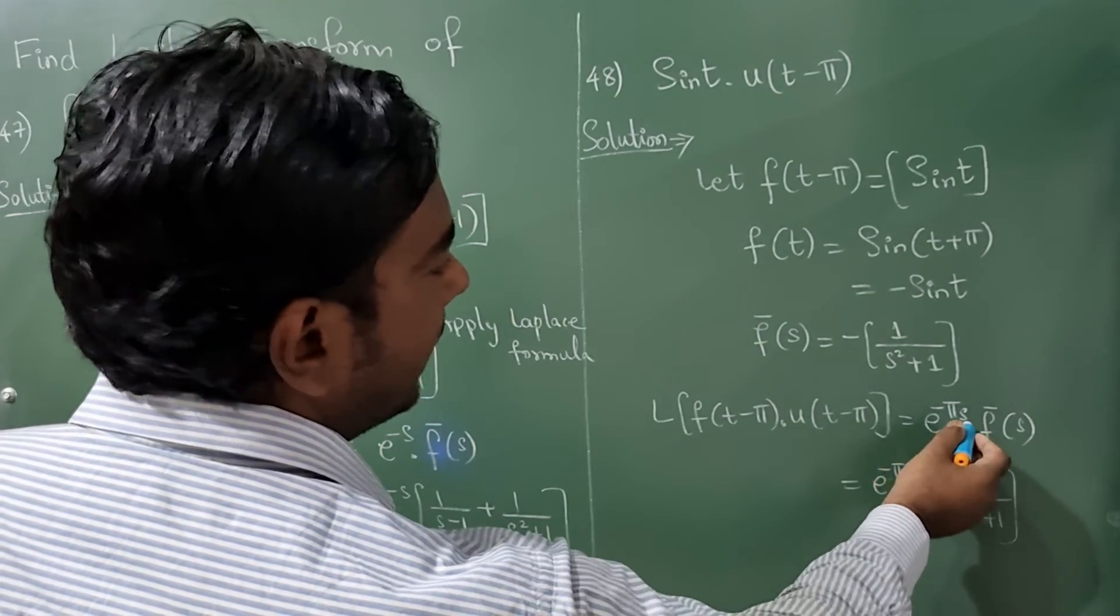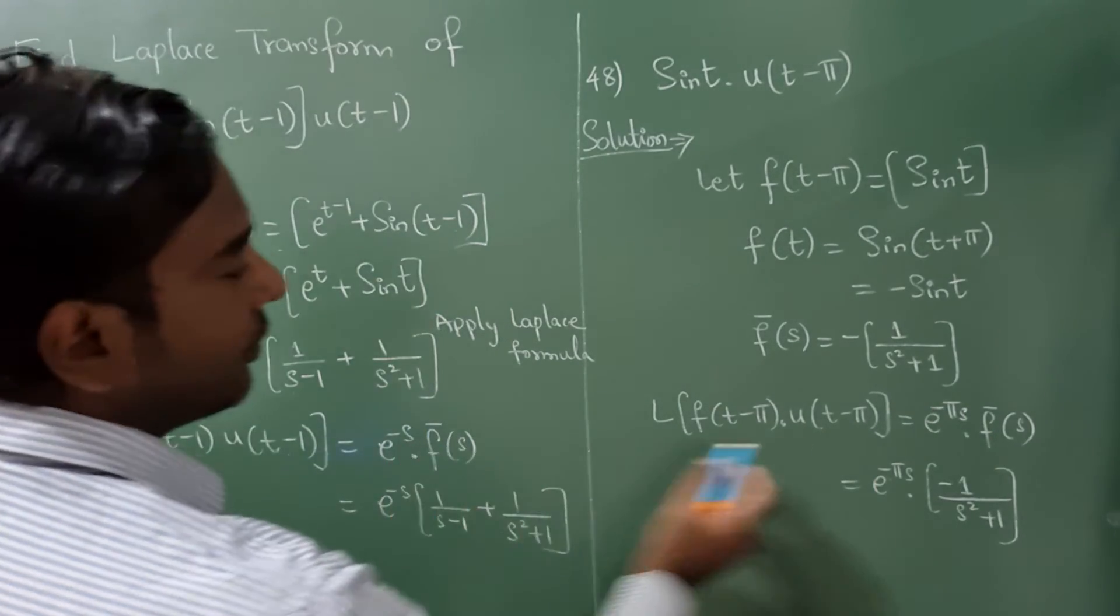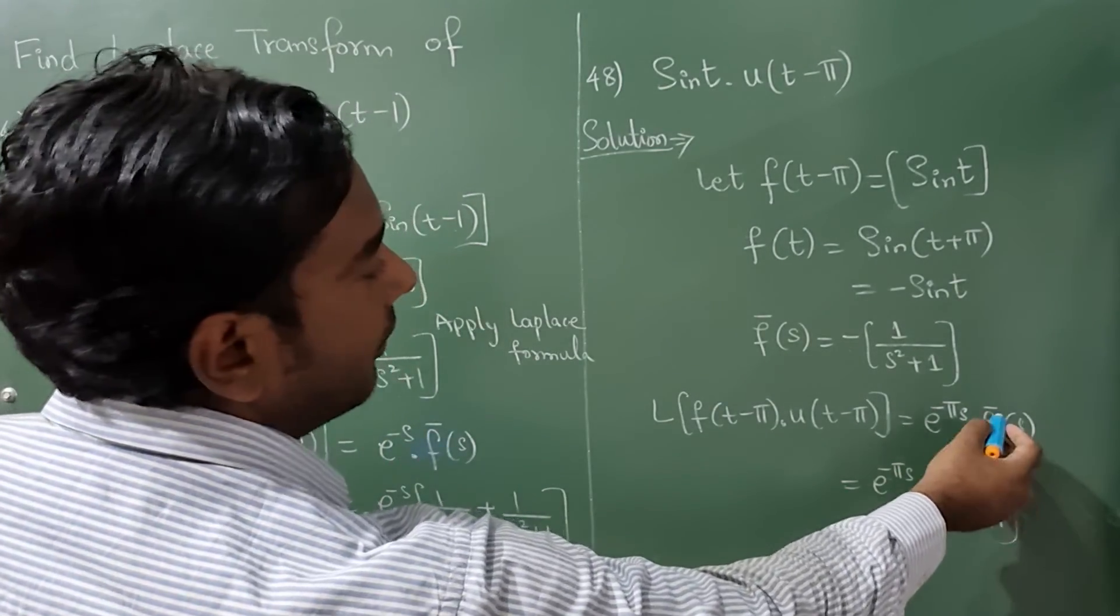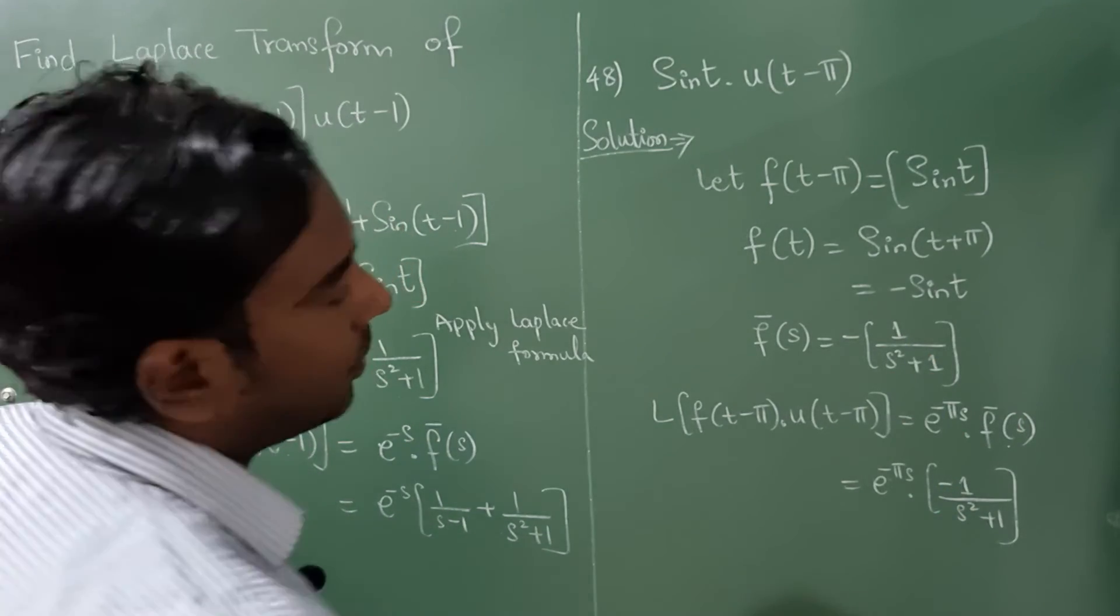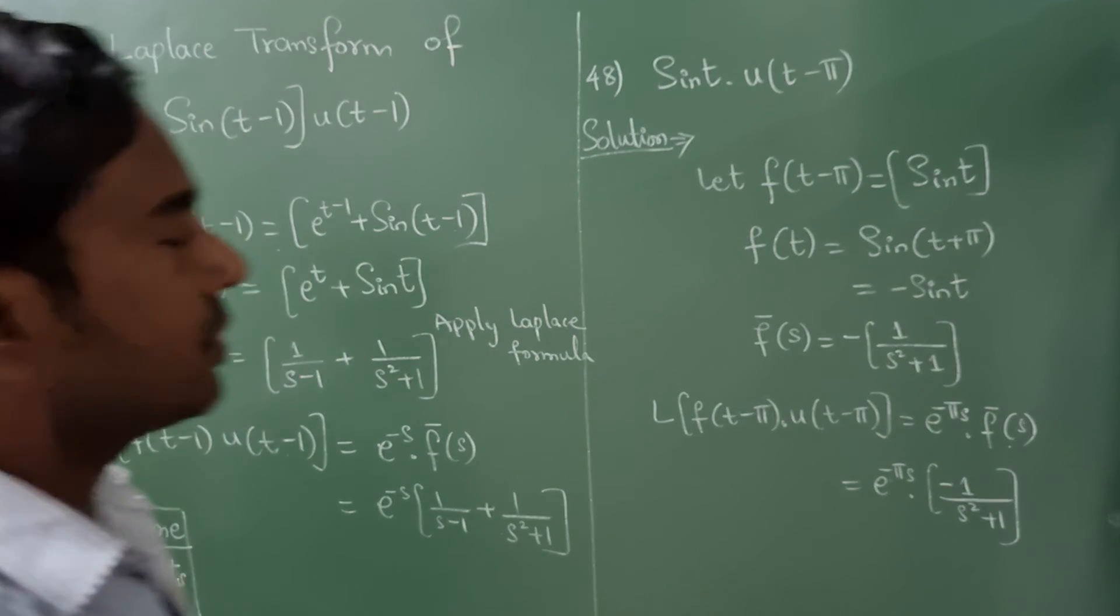F dash of s, f dash of s. Now f dash of s value is minus 1 divided by s square plus 1. I hope you understood this very well.